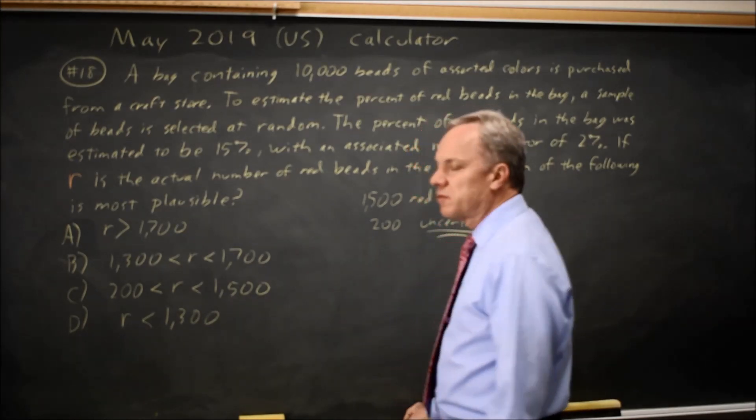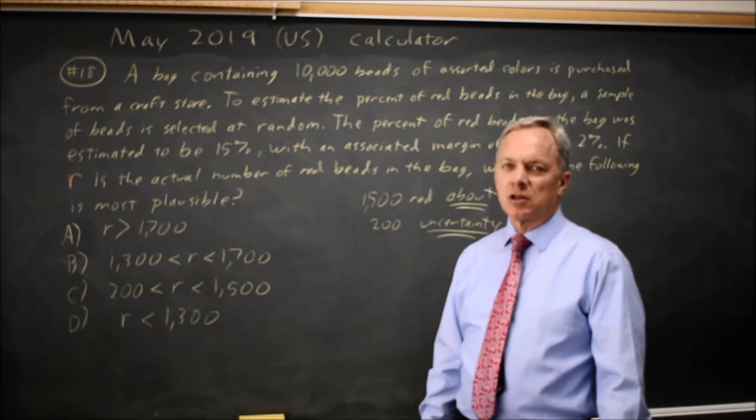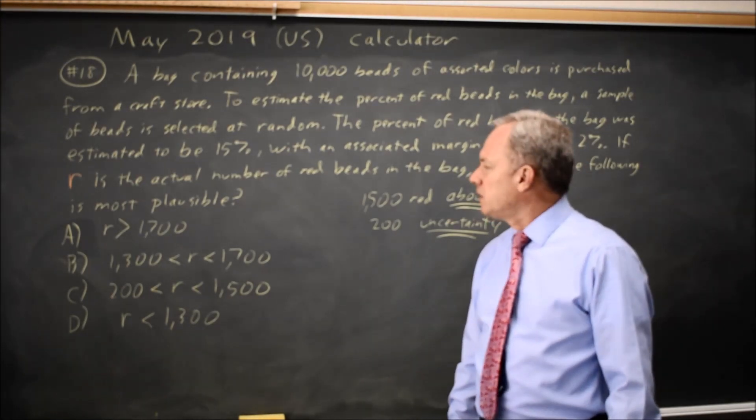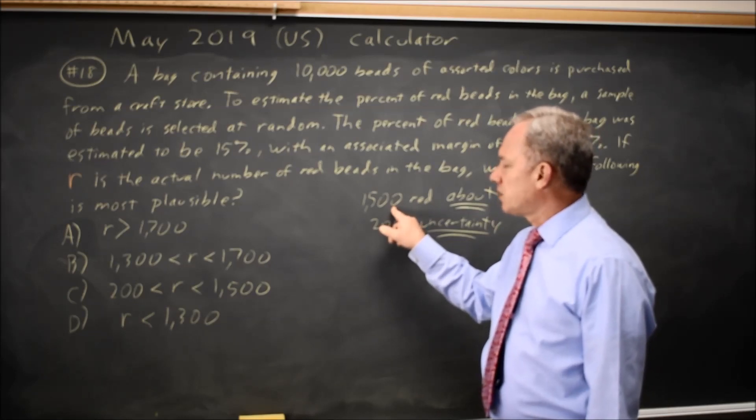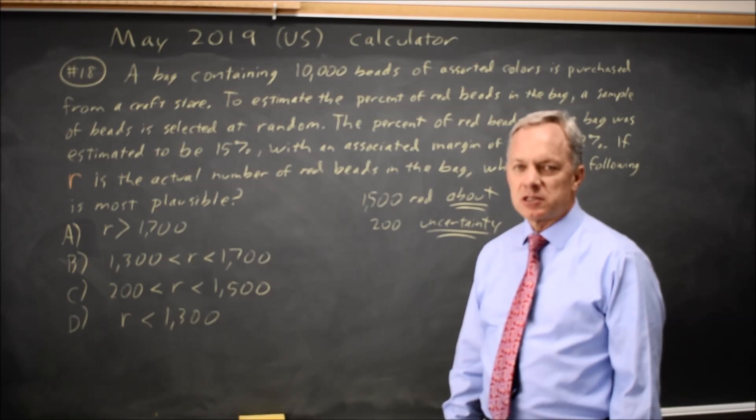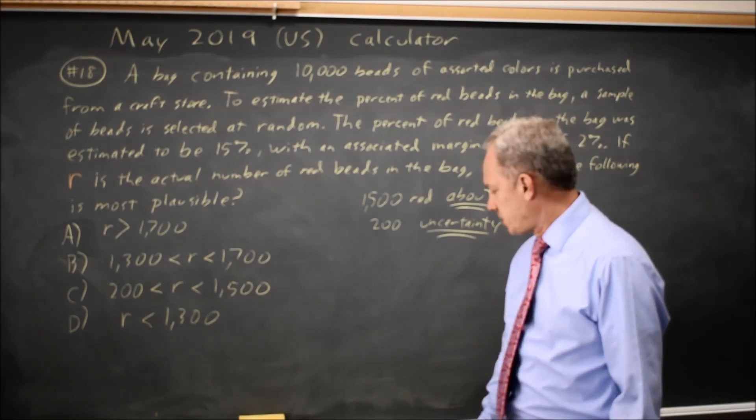And that 200 represents how large the error could plausibly be in either direction from the estimate. So we're estimating 1,500 and plausibly the number of red beads could be as low as 1,300 or as high as 1,700.